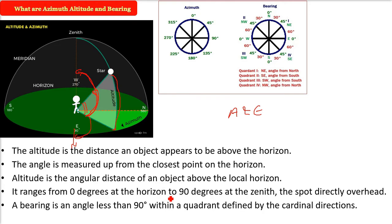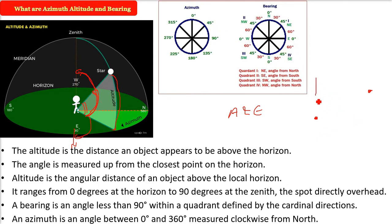A bearing is an angle less than 90 degrees within a quadrant defined by the cardinal direction. This is one object and this is another object. The azimuth goes from 0 to 30 degrees, measured clockwise from north. You are standing here. This is your cardinal direction, north and south. Make the XY direction and join these two points. You go from north, which is the closest. This angle is bearing.